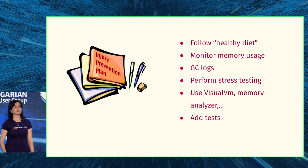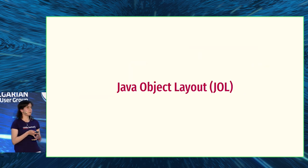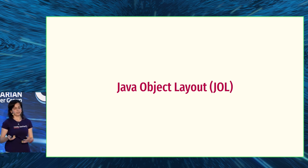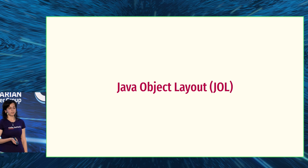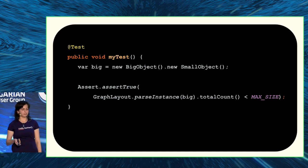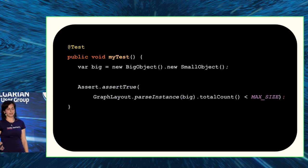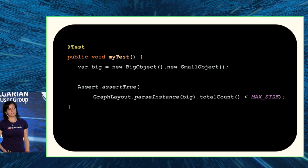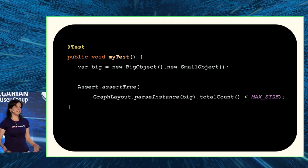Another thing we can do is add tests. There is a tool called Java Object Layout that can show you the layout of objects in memory, or layouts of classes and even JVMs. With this tool, you can write a kind of test: for example, if BigObject caused trouble previously, add an assertion saying this object should not hold more than a certain maximum size. If you're developing and one day you exceed this max size, this test will fail, and you'll have to investigate whether it failed due to natural growth or because you introduced another leak. Of course, it won't save you every time, but at least it can detect some cases.